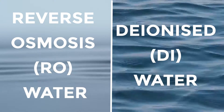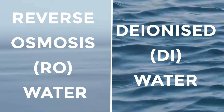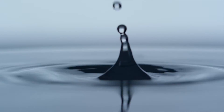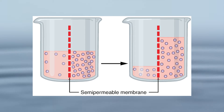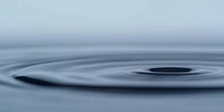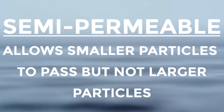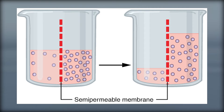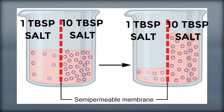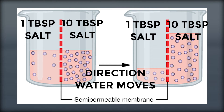RO water has gone through a reverse osmosis filtration system, so we need to first understand what osmosis is. Let's say we have a glass of water that is divided by a semi-permeable membrane — meaning that some things can pass through the membrane while other things cannot. On one side we dissolve 10 tablespoons of salt, and on the other side we dissolve 1 tablespoon of salt. Osmosis is defined as a process by which molecules of a solvent, in this case water, tend to pass through a semi-permeable membrane from a less concentrated solution into a more concentrated one. In this case, the water will move from the side with 1 tablespoon of salt to the side with 10 tablespoons of salt.